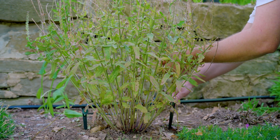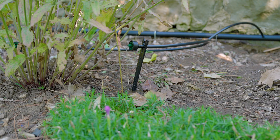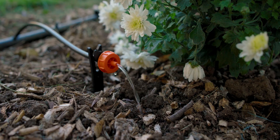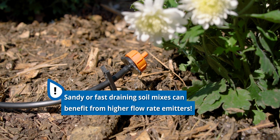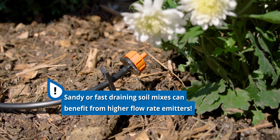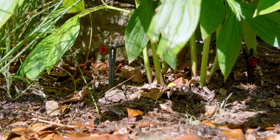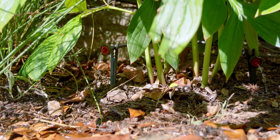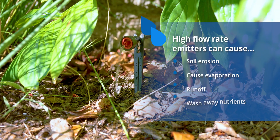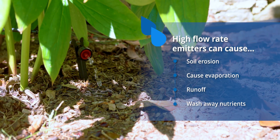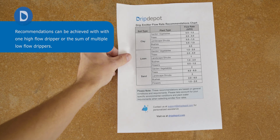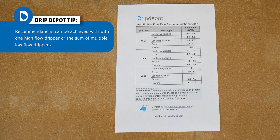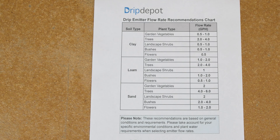Using more precise low flow emitters is the optimal way to irrigate, with one big exception — exceptionally fast draining sandy soils. If you need to go with higher flow rate emitters for one of the reasons mentioned, keep the trade-offs in mind. Going with a high flow emitter can cause soil erosion, evaporation, runoff, and lost nutrients by washing nutrients out of your soil. Here's a chart you can pause the video on, or check out at a link in the description, that offers general flow rate recommendations depending on your soil and plant type.